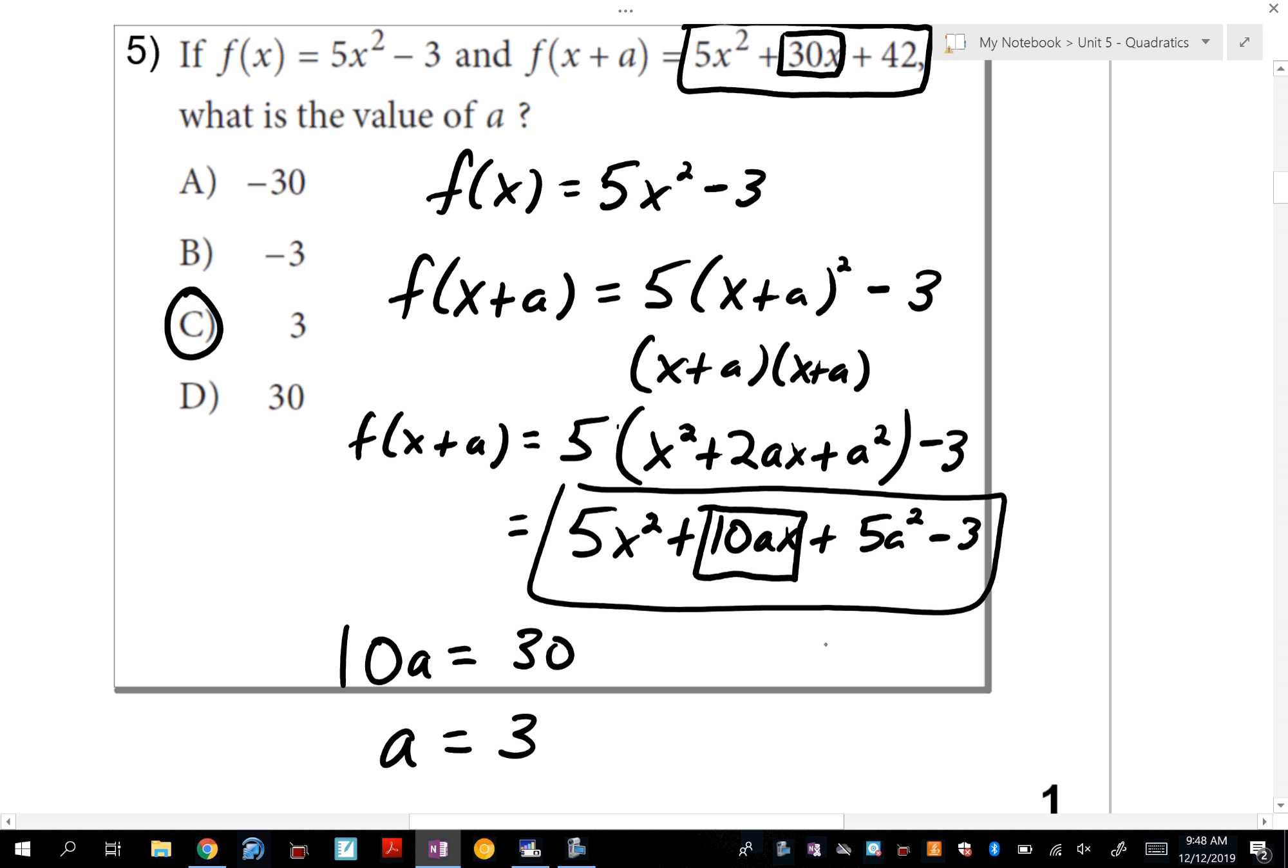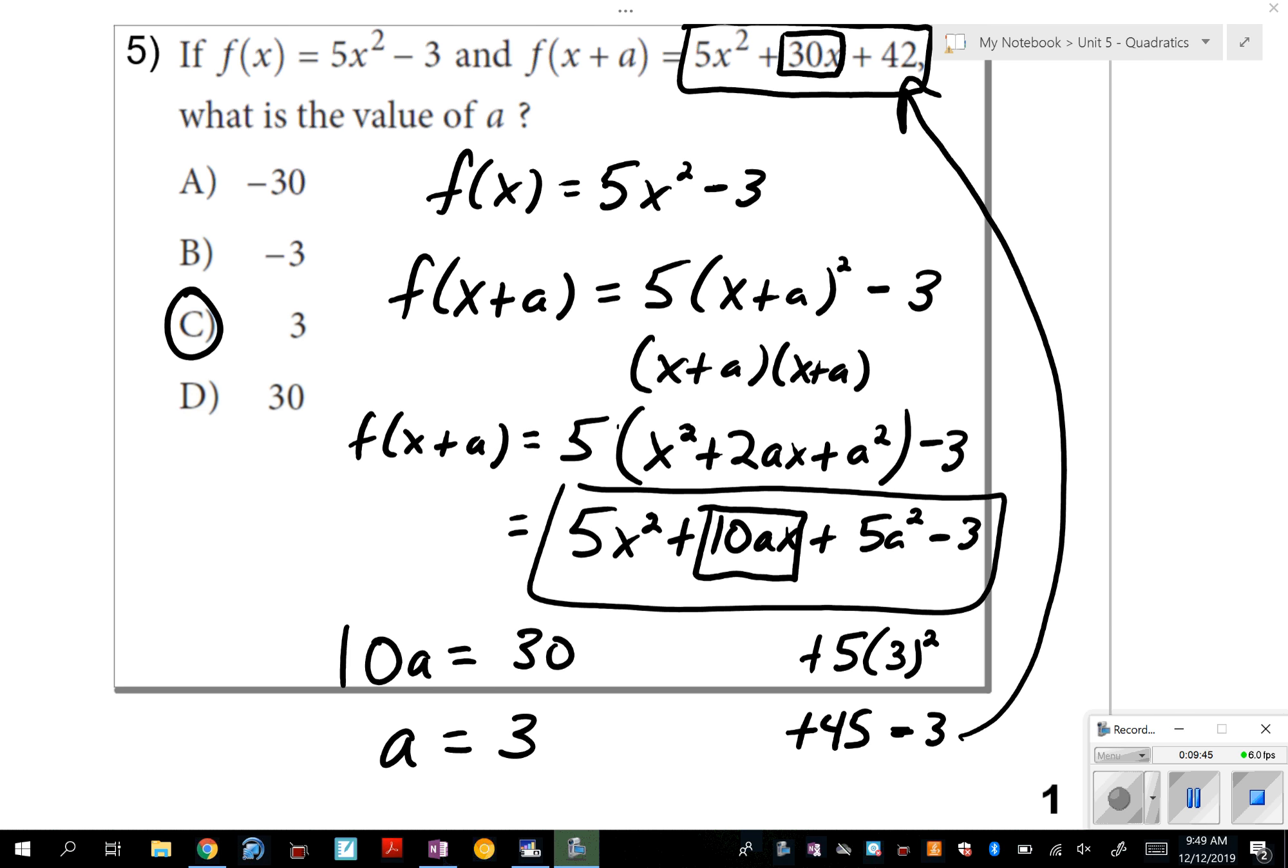a is 3. But let me show you again why that's true. If you were to plug a into this, 5 times 3², 3 squared is 9, 9 times 5 is 45. And positive 45 - 3 is 42, which you can confirm is your c value in the first part of the problem. So number 5, the answer is C. That does it for page 1. Tune in for page 2 coming soon.